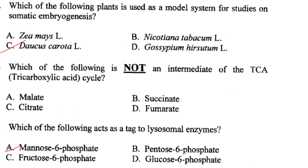Which plant is used as a model system for studies on somatic embryogenesis? It is carrot, scientific name Daucus carota. Answer is option C.